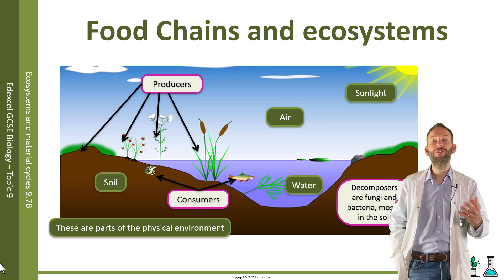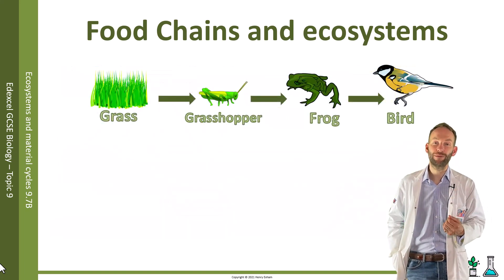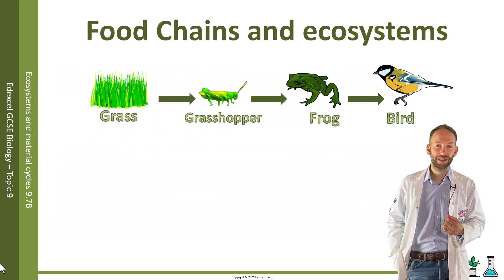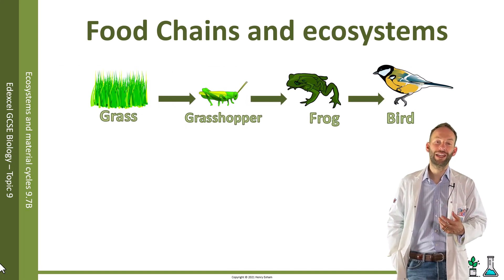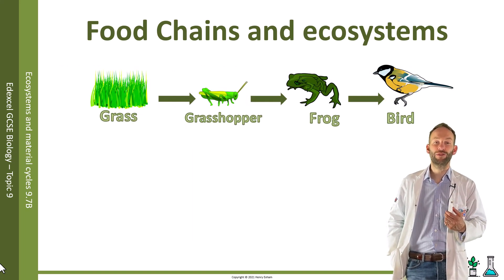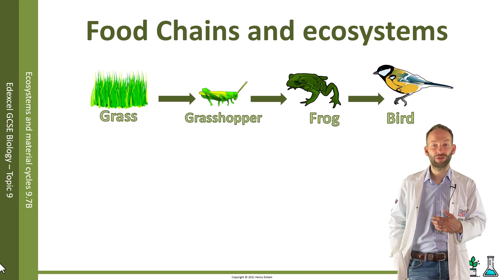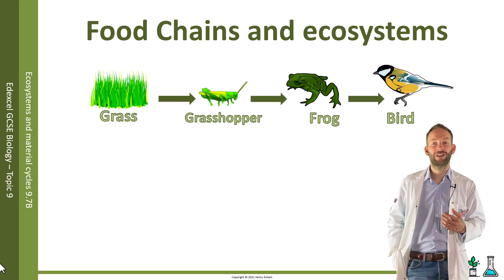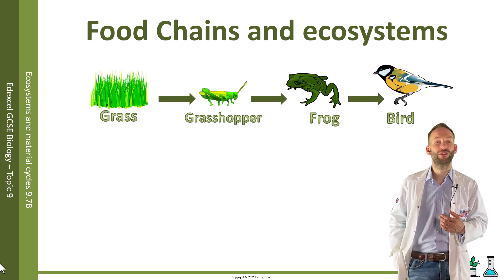Herbivores are animals that just eat plants — in this food chain, that would be the grasshopper. Carnivores are animals that eat other animals — in this case, the frog and the bird are both examples of carnivores.